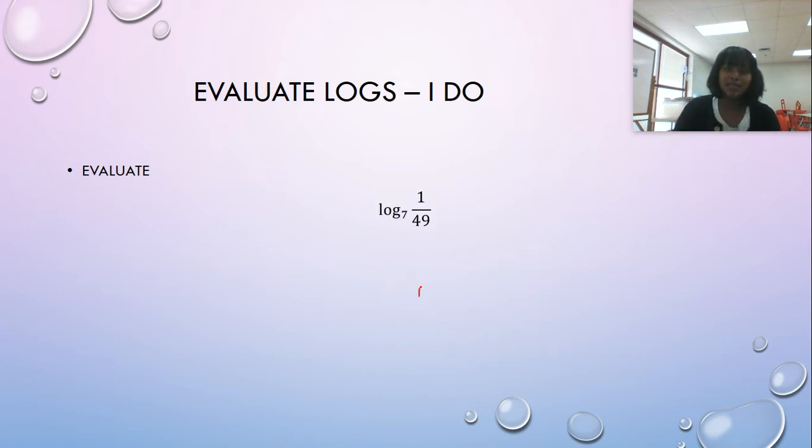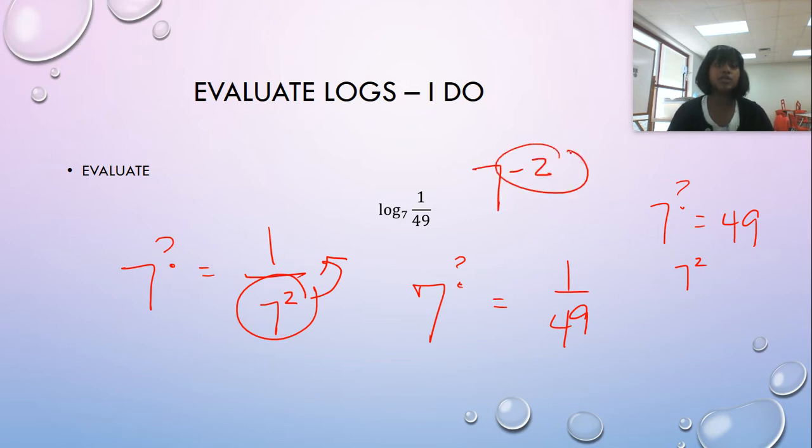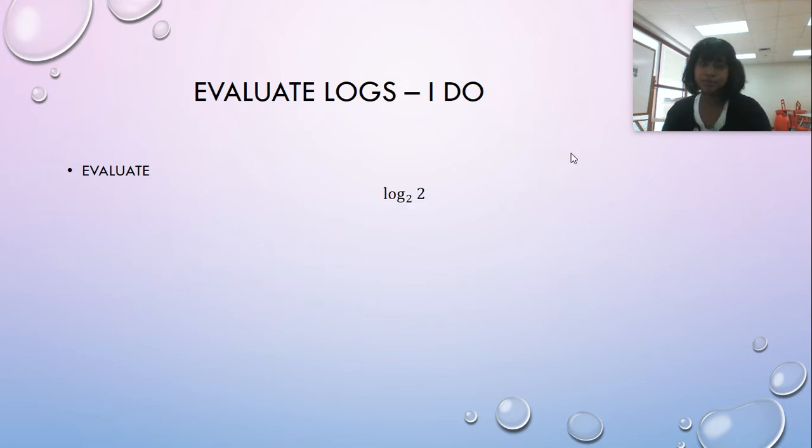What about this one? Seven to the what is equal to one over 49? That one's a little bit tougher. First let's ask ourselves seven to the what is just equal to 49. That's seven squared. So I'm actually looking at seven to the what is equal to one over seven squared. If I remember my negative properties, if I'm on bottom, I'm actually on top if I move it negatively. So this is seven to the negative two. Our answer is negative two.